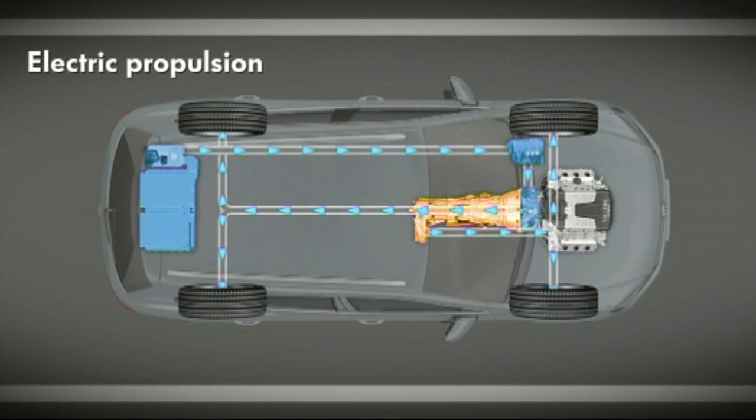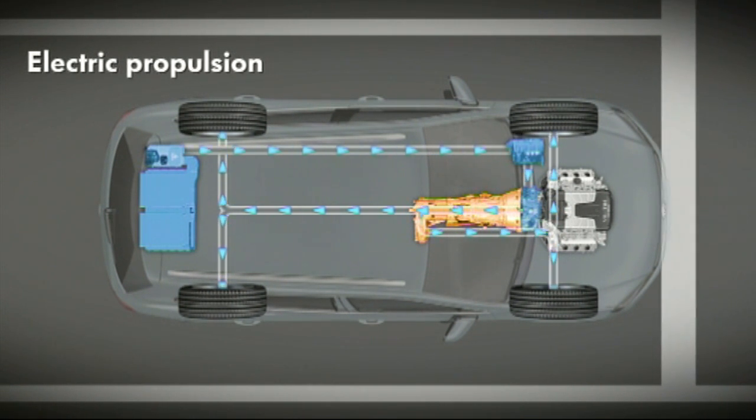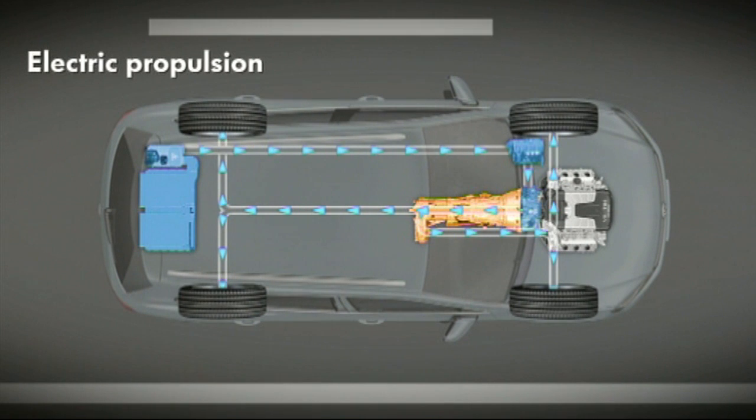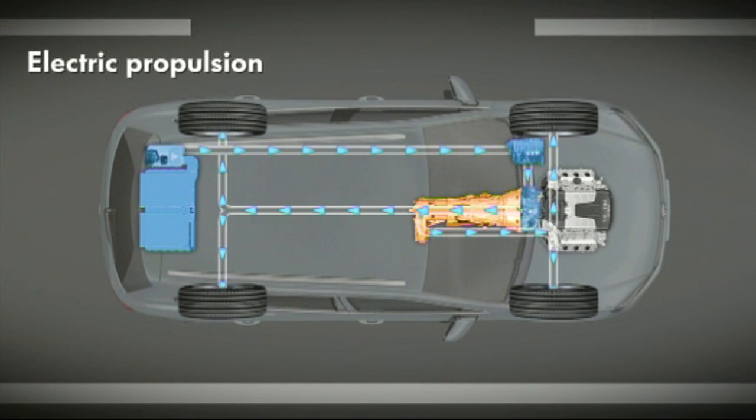When the driver gently accelerates the new Touareg Hybrid, it starts off under electric power. The electric motor alone drives the new Touareg up to a speed of 50 km per hour. The TSI petrol engine remains decoupled by means of the separating clutch and so does not consume any energy.